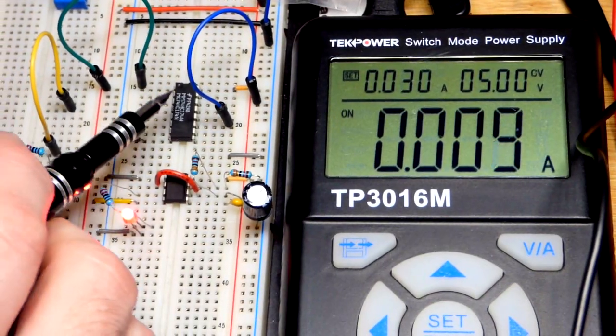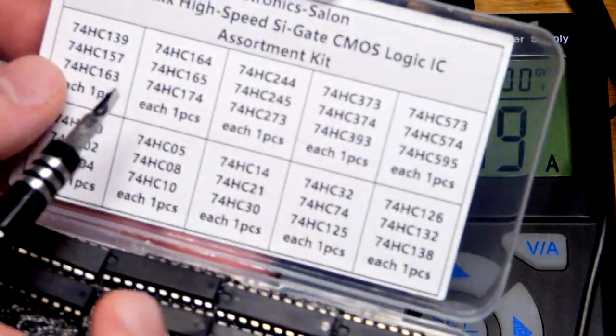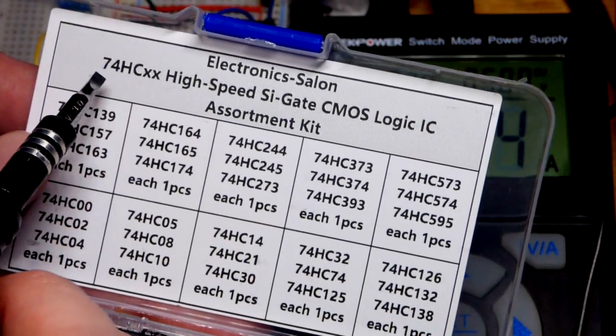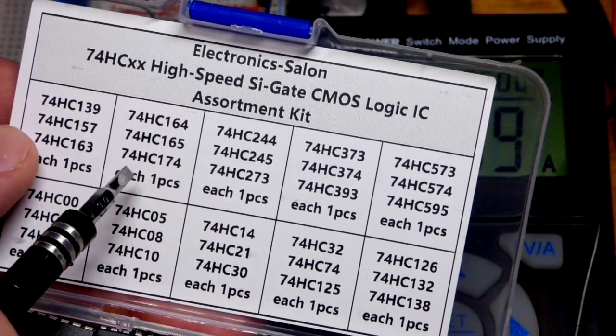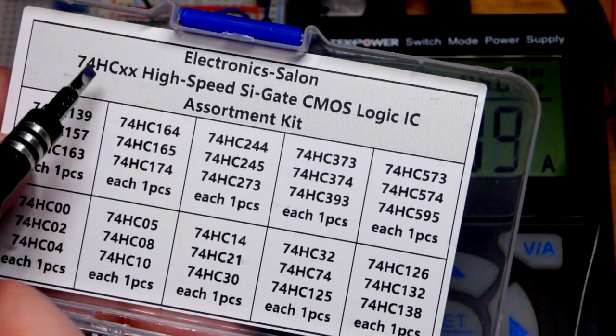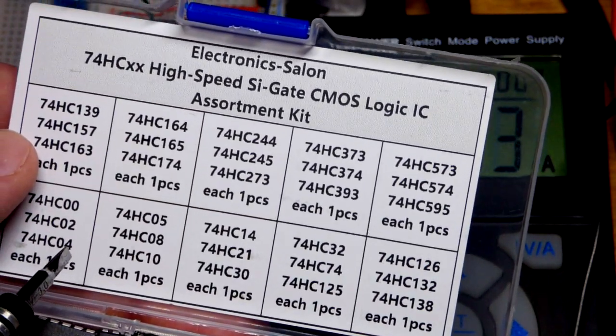In this video we're going to look at this integrated circuit. Its part number is longer but basically it is a 74174 integrated circuit, the high-speed CMOS version. I got it out of this kit right there.